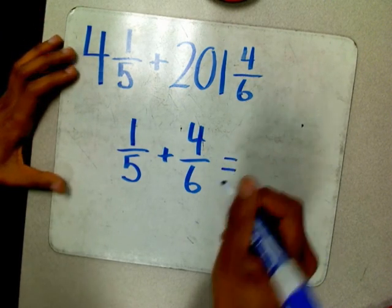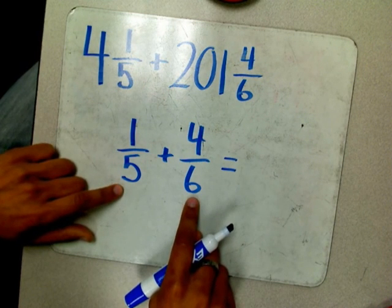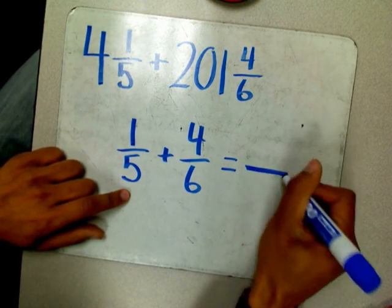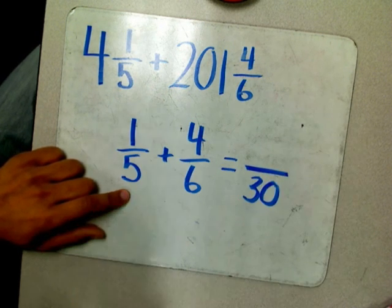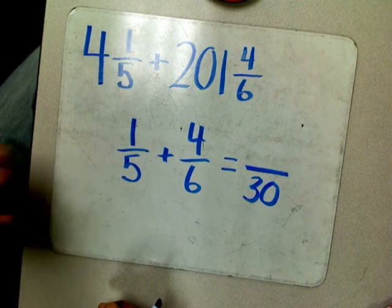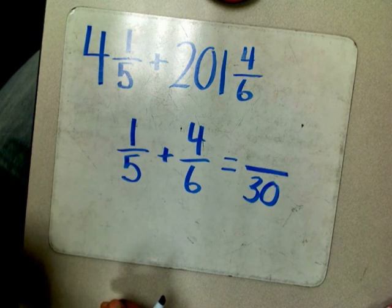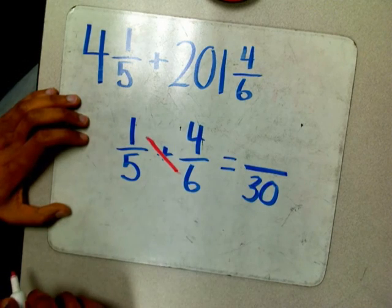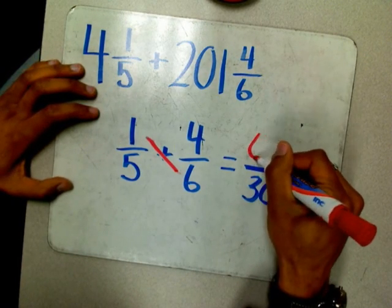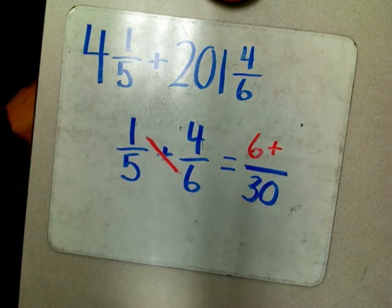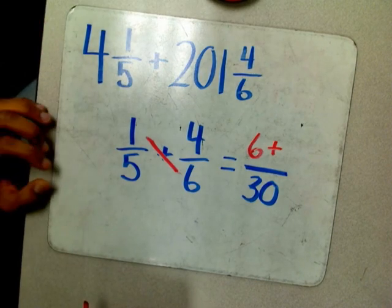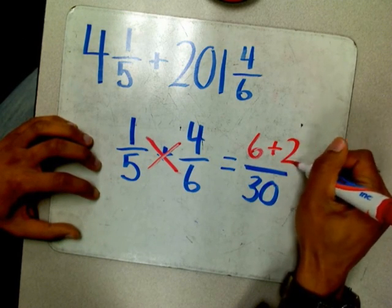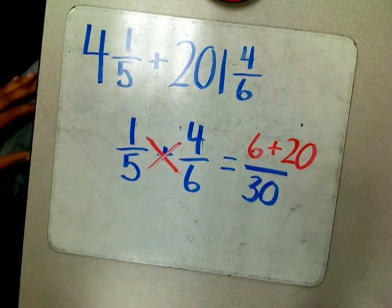I remember what to do, and hopefully you do too. We need to come up with a common denominator. Five is not equal to six, six is not equal to five, so what should we do? We should multiply five times six equals thirty. I know what to do next. We need to multiply six times one. Six times one equals six. I know what to do next. We still need to multiply five times four equals twenty.